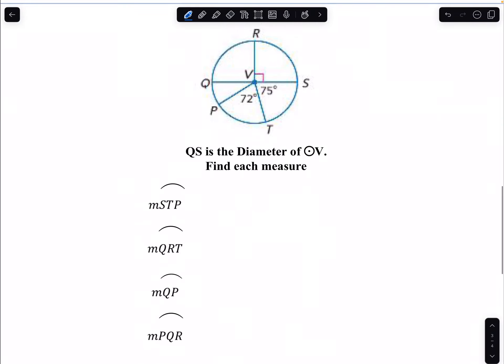So in this scenario, we have a circle with circle V, or QS is the diameter. Here, we're going to talk about first the measure of the arc. Just like we spoke about before with the measure of an angle, now we're dealing with the measure of an arc. And the way that we do that is we go down to the center of the circle to find the measure of an arc.